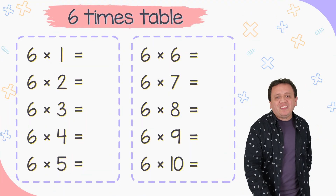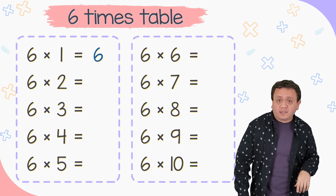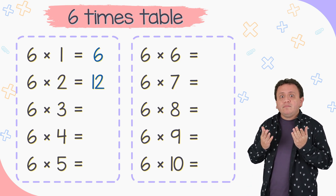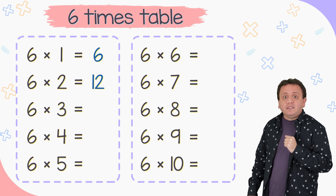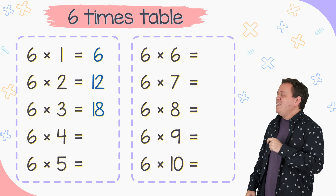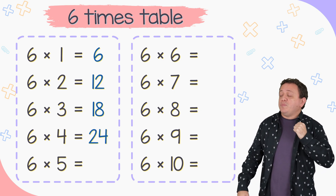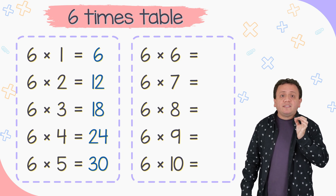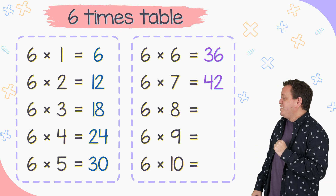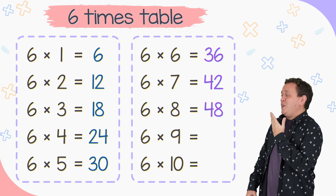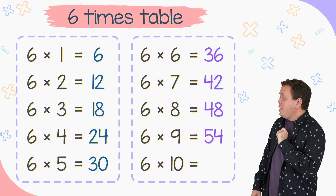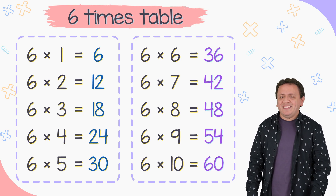And here we have the 6 times table. 6 times 1 equals 6. 6 times 2 equals 12. And 6 times 3 equals... What is 6 times 3? Yes, 18. 6 times 4 equals 24. 6 times 5 equals 30. 6 times 6 equals 36. 6 times 7 equals 42. 6 times 8 equals 48. 6 times 9 equals 54. The last one: 6 times 10 equals 60.